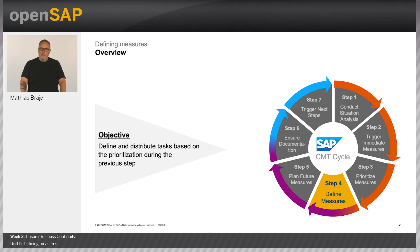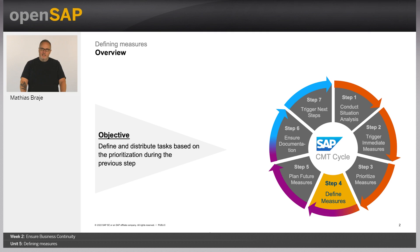And I will explain to you why it is so important to really define the measures. As a crisis management team, there are multiple facets of a crisis that you have to tackle, and likely there is not just one or two measures that you need to trigger, where you also need support from people outside the crisis management team who do not have full transparency into the situation.